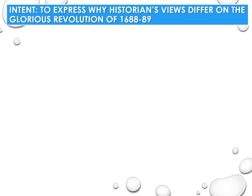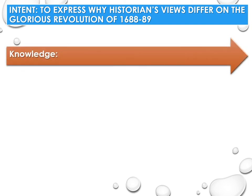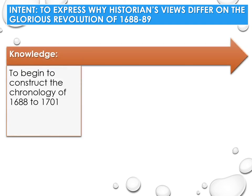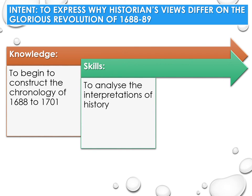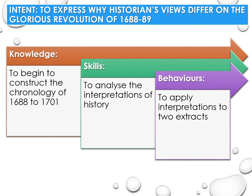The intention of this lecture was for you to be able to express why historians' views differ on the Glorious Revolution of 1688 and 1689. Knowledge-wise, you have begun to construct the chronology of 1688 to 1701. Skills-wise, you have begun to analyse the interpretations of history, and behaviourally, you are beginning to apply this knowledge to interpretations in extracts.